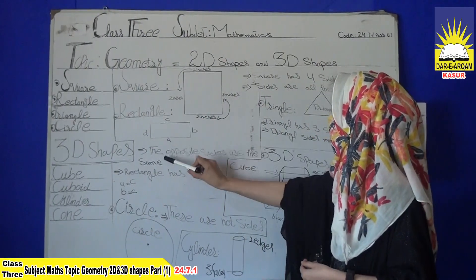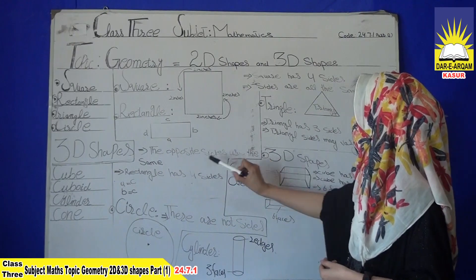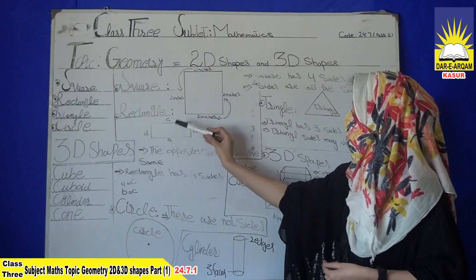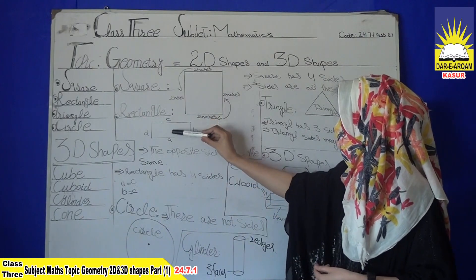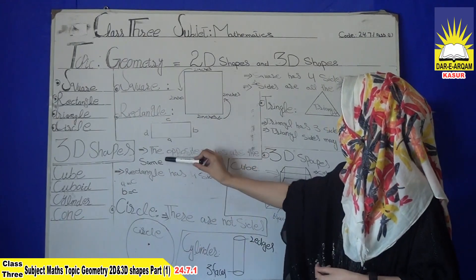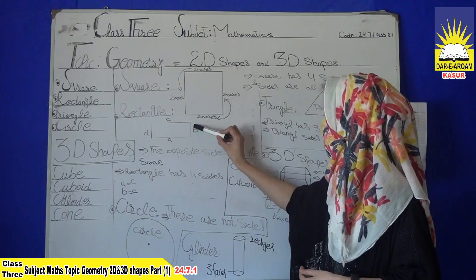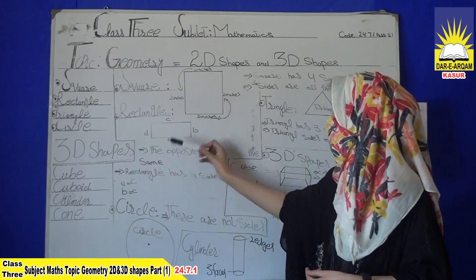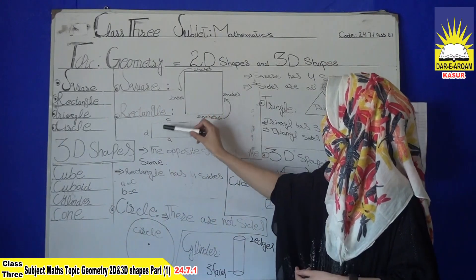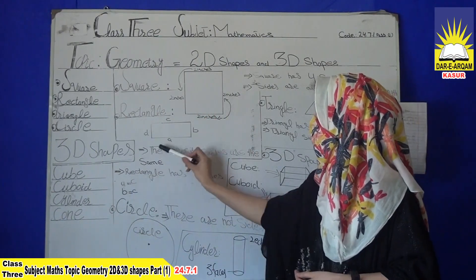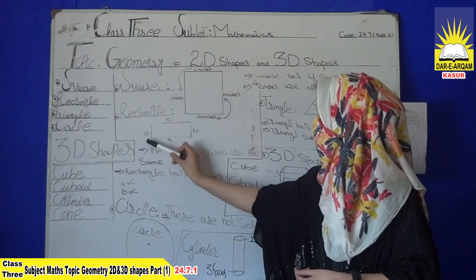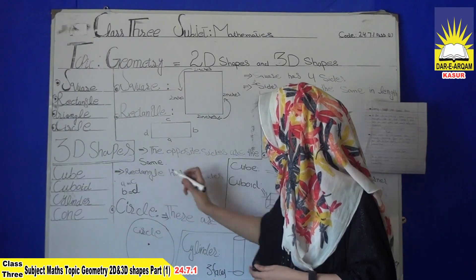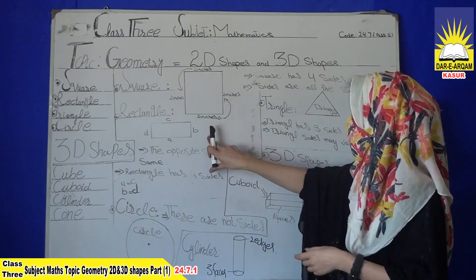Next we have a rectangle. A rectangle has 4 sides and the opposite sides are the same. These 2 sides and these 2 sides are same — like A and C, D and B. A equals C and B equals D. This is called a rectangle.